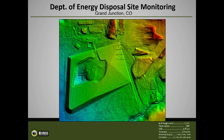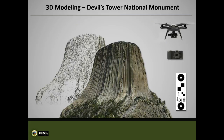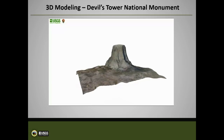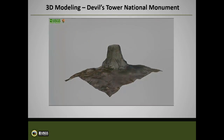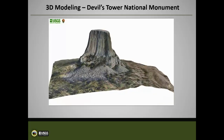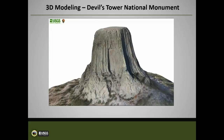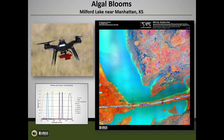Getting accuracies on Devil's Tower vertically of about seven to nine centimeter, and with ground control down, three to four centimeter in the horizontal. But that's not video — that's an actual model. It can be a geographic product. Algae blooms are a big deal for us and we can use that little multispectral camera for that as well.